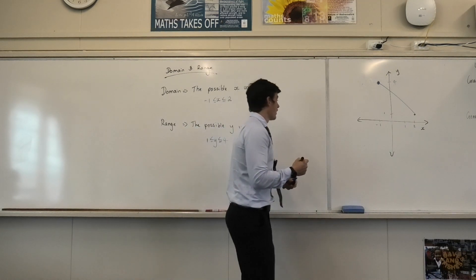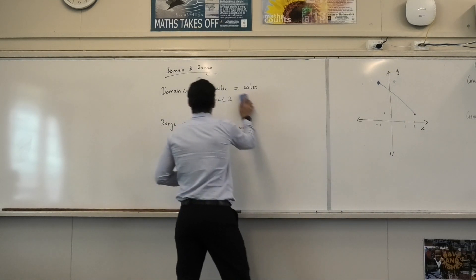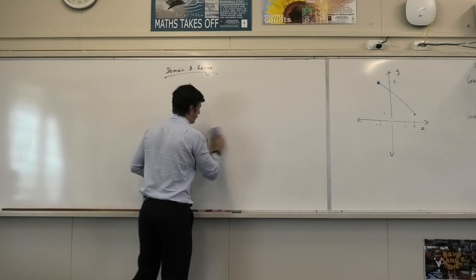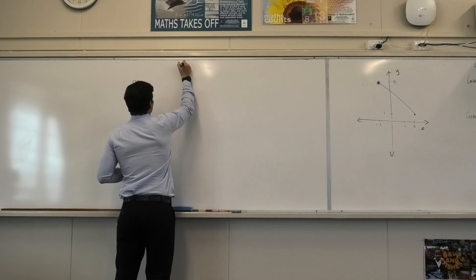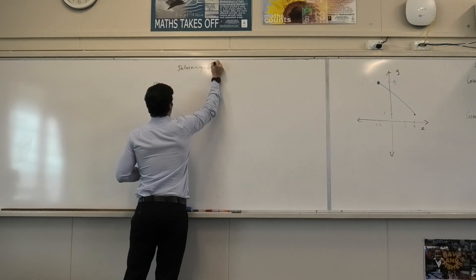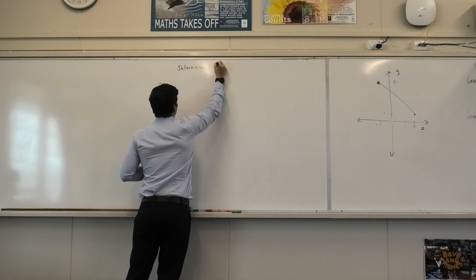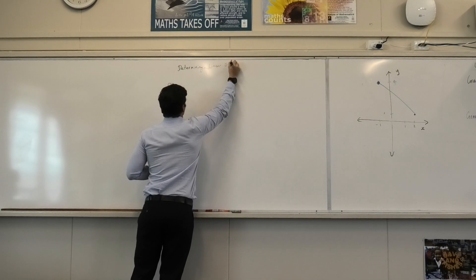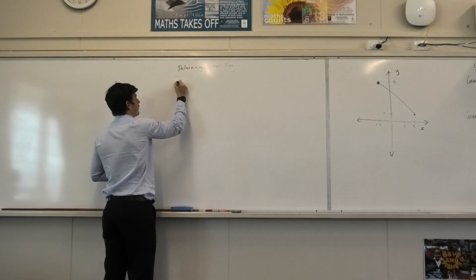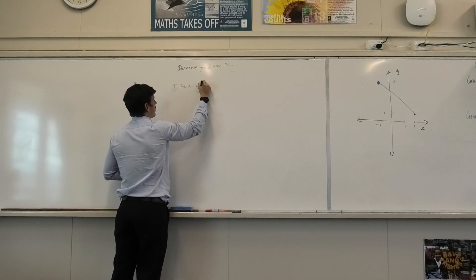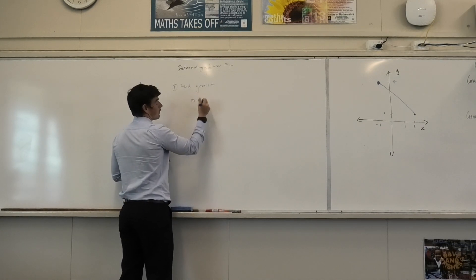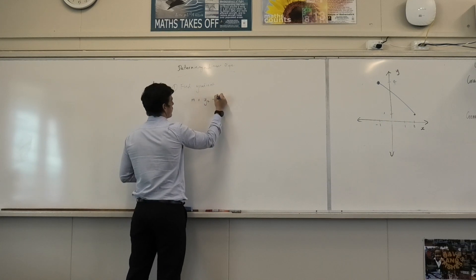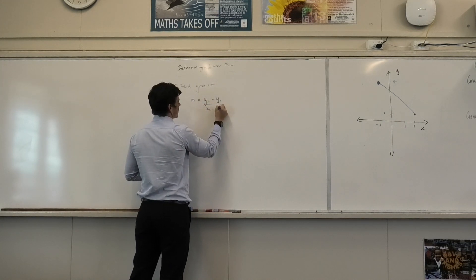Yeah, let's find our gradient first. I'm just going to write this out so we can see clearly what's going on. So you said you want to find your gradient, correct? How do we do that? M equals x2 take x1 over y2 take y1, or the other way around, y2 minus y1 over x2 minus x1.